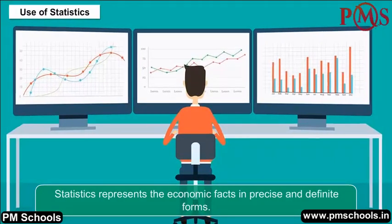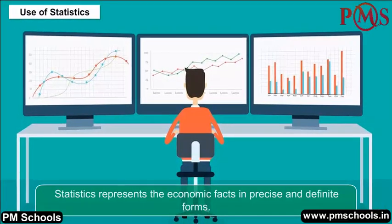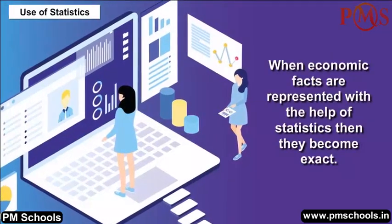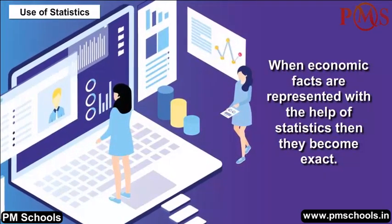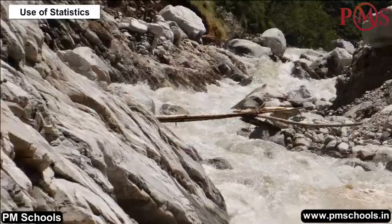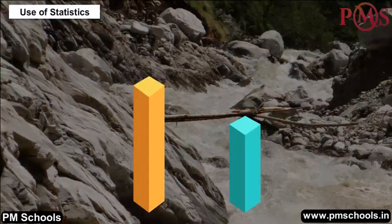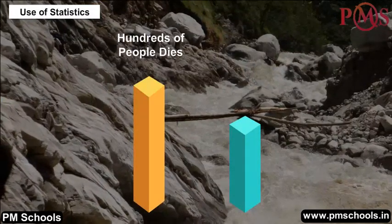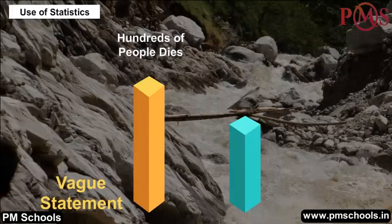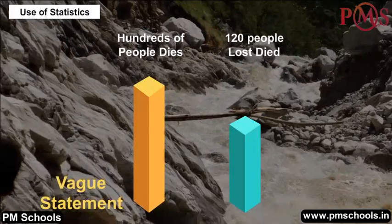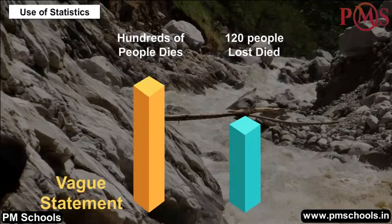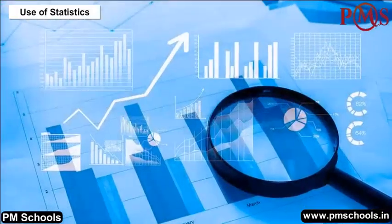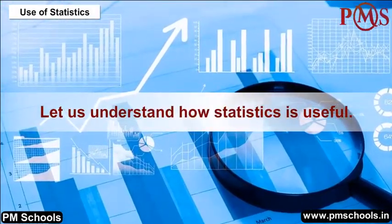Statistics represents economic facts in precise and definite forms. When economic facts are represented with the help of statistics, they become exact. For example, if we say 'hundreds of people died in Uttarakhand due to a cloudburst,' that is a vague statement. But if we say '120 people died in Uttarakhand due to a massive cloudburst,' that is an exact number. This illustrates how statistics is useful.